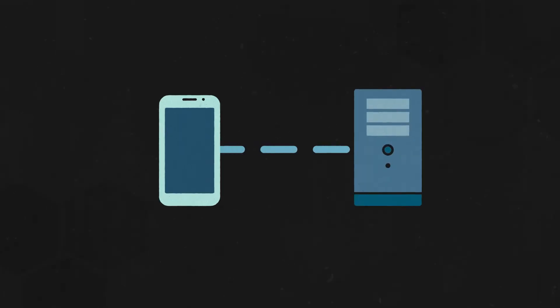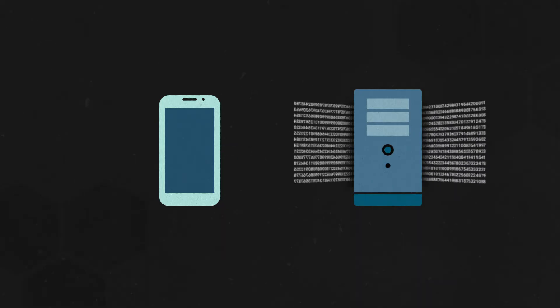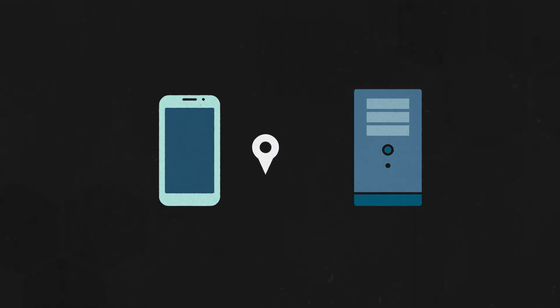After a device has enough raw data, it transmits it to the server that operates your GPS app of choice, like Google Maps, Apple Maps, Waze, or any other app that uses your location. The server then processes this data using algorithms that give a precise location. Finally, the accurate location is sent back to the user, presented through the app's user interface.